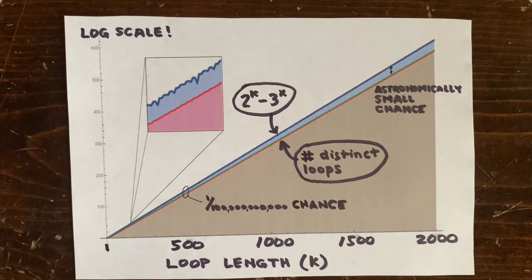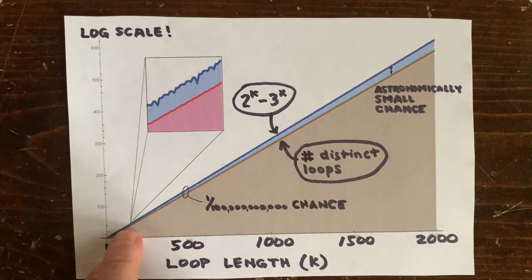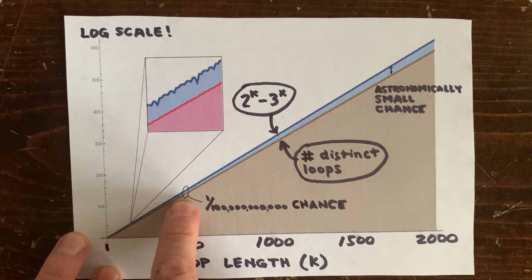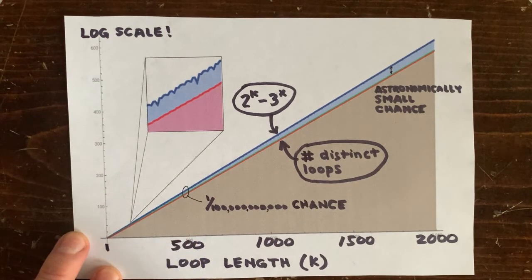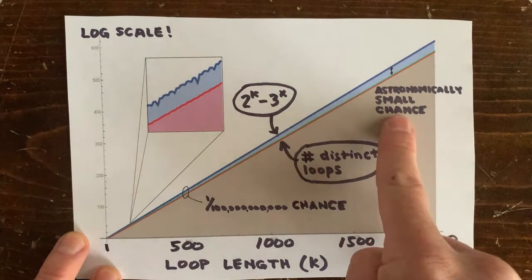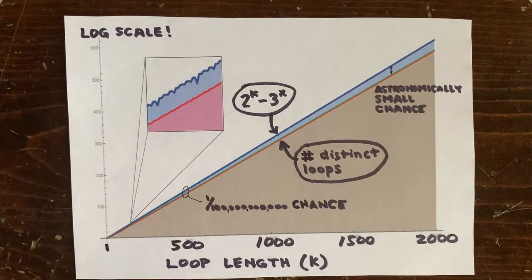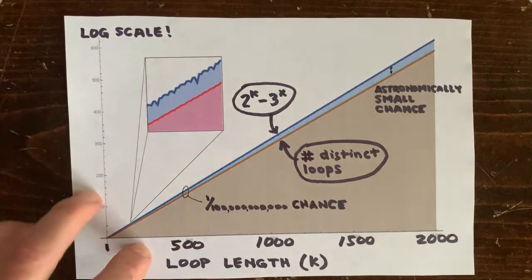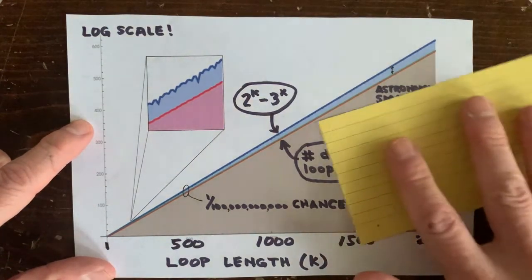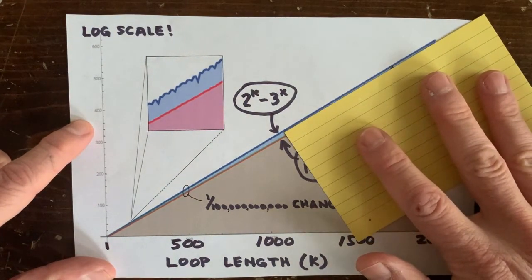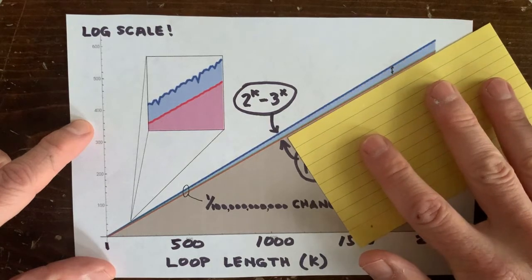Unfortunately for us, the y-axis is on the log scale. So at length 100 we have a 1 in 10,000 chance of an integer loop. At length 500, like we said, the odds are 1 in 100 billion and it gets worse. The blue line is pulling away from the red line exponentially fast. How about dips in the blue line? That's where for whatever crazy reason 2 to the k minus 3 to the x is smaller than normal. Can we concentrate on those? Well even so, the ragged blue line still seems to be pulling away fast.